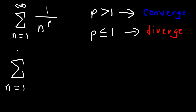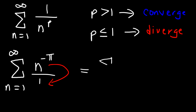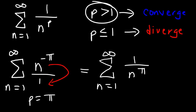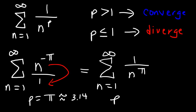Here's another example. Let's say that a sub n is n raised to the negative pi. We need to rewrite it — we need to put it in the standard form, so we want n in the denominator. As we move it from the top to the bottom, the exponent changes from negative pi to positive pi. So p is equal to pi, which is approximately 3.14, and since 3.14 is greater than 1, p is greater than 1, which means the original series converges.